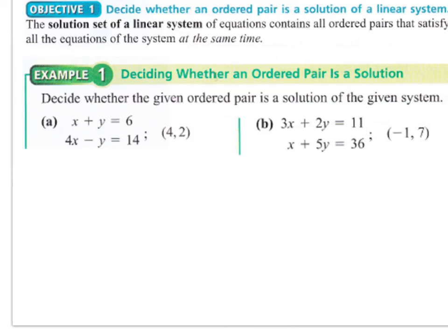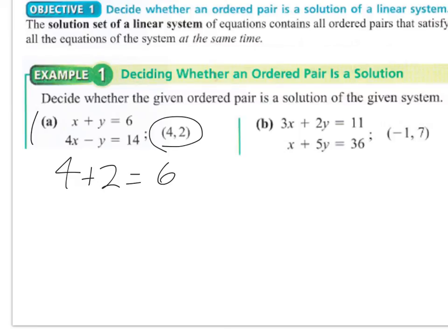First we'll take a look at deciding whether an ordered pair is a solution to a given system, starting over here with x plus y equals 6, 4x minus y equals 14, and the ordered pair they give us is (4, 2). To check to see if that's a solution to the system, we need to make sure that it works in both equations. So if I plug the 4 and 2 into the first equation, x plus y equals 6, that does work out to be true.